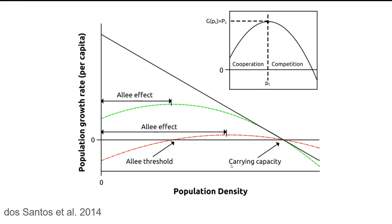One of the things I really love about this figure from the Dos Santos paper is that it shows the link between different processes happening in that population. On the left-hand side of the inset it shows cooperation — these are population densities where cooperation is helping the population build, or is otherwise required and not being fulfilled. On the other side is competition, where we're starting to fill up the carrying capacity and there start to be negative density-dependent effects. So there are positive density-dependent effects on one side and negative density-dependent effects on the other.